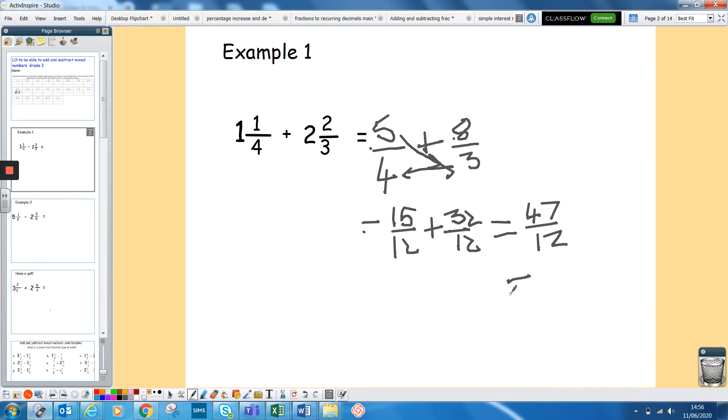Now just remember you can simplify that. You've got how many 12s going to 47, so it's 12, 24, 36, so three, and you've got 11 twelfths left over. So hopefully that should be easy enough.